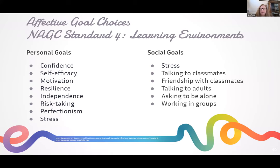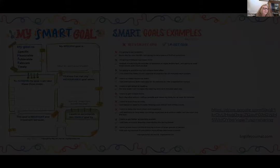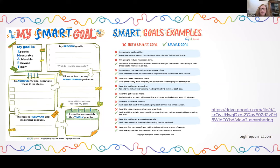These goal choices relate back to the overexcitabilities and affective competencies from NAGC, also on our state's department of education website for gifted students. Each student would pick a personal or social competence goal that relates to their overexcitabilities. A student with an emotional OE might struggle with resilience or risk-taking. An intellectual OE student might struggle with perfectionism or stress. An imaginational OE student might struggle with talking to classmates or working in groups. Or these could be used as the student's strength areas — not necessarily a deficit, but something they want to continue to build upon. SMART goals need to be specific, measurable, achievable, relevant, and timely.